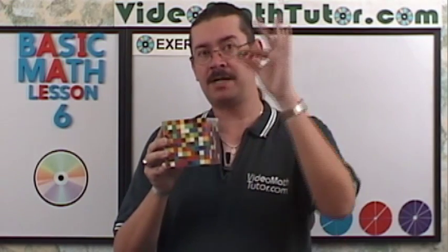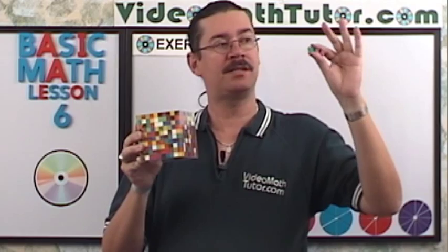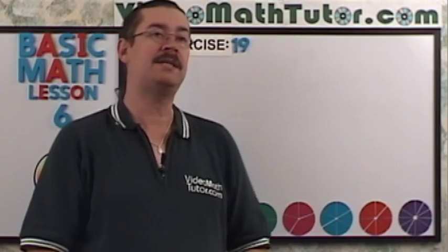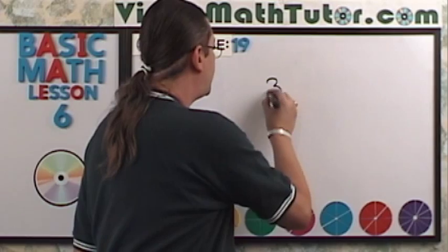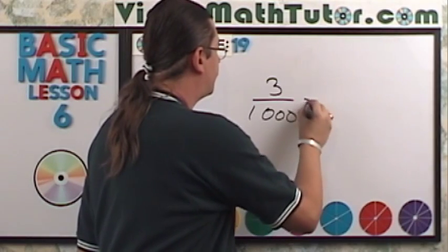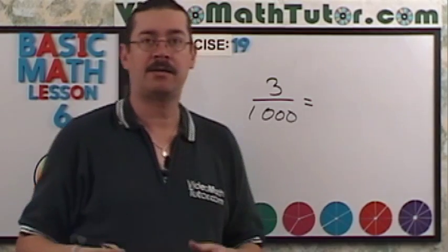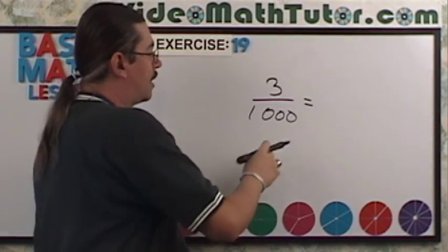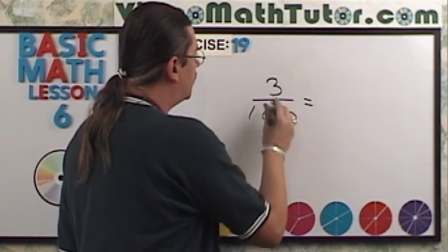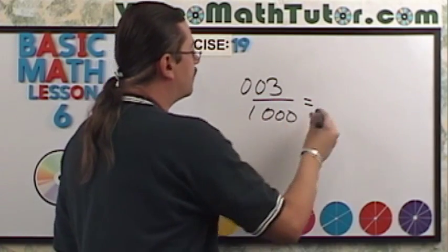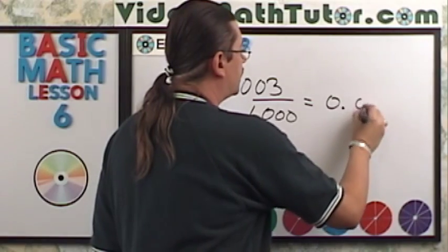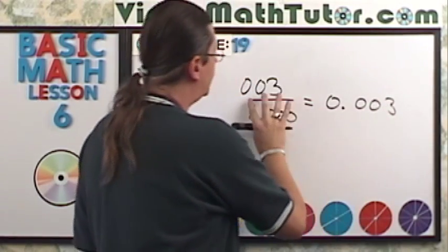Here we have a thousand cubes. If I say, remove three of them from here, what's the decimal fraction and the decimal form of these three little cubes in relation to the thousand? Well, let's see. We have three out of a thousand. That's going to be my decimal fraction. And to create the decimal form, I only have one digit on top and three zeros on the bottom. So I'm going to add a couple of leading zeros here. So my answer is going to be 0.003. Again, this matches this number right here.